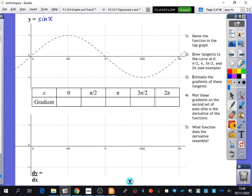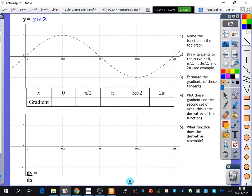I've said see example because I'm going to do one of them as an example for you now. So I'm going to draw a tangent at zero to the curve like this, one at π/2, one at π, one at 3π/2, and one at 2π.